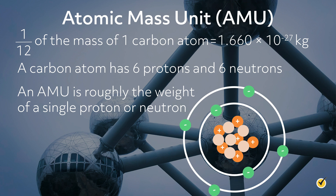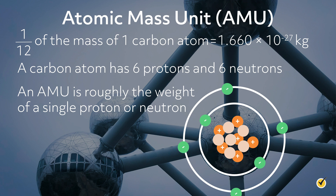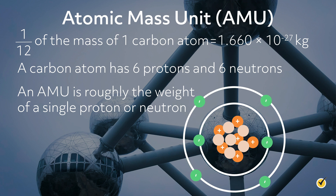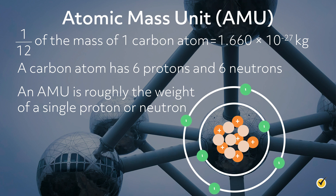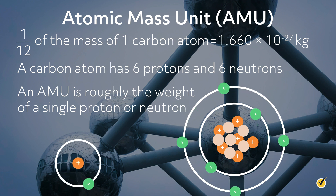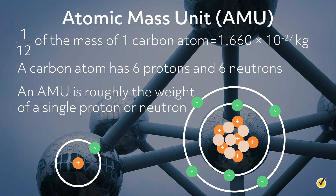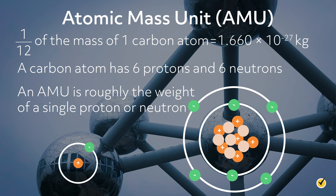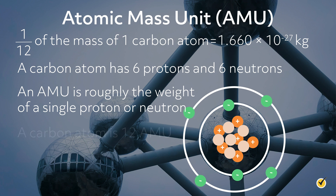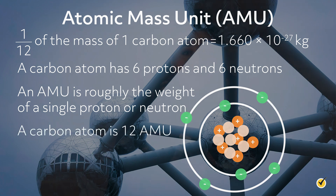This was, in a way, by accident. At the time, scientists didn't even know that protons, neutrons, or electrons existed. They defined carbon as 12 because they wanted the lightest element, hydrogen, to be one, which in a way does acknowledge the existence of subatomic particles, just not intentionally. Regardless, by definition, a carbon atom is 12 AMU.